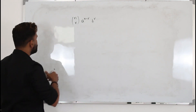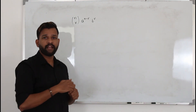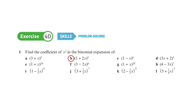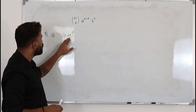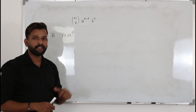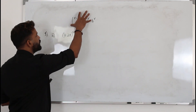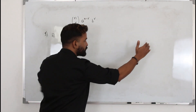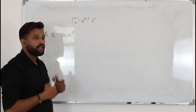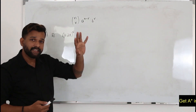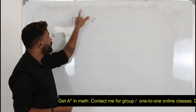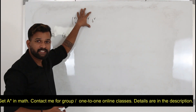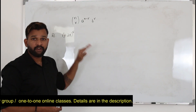Let's take a question from Exercise 4D to explain this. They want you to find the coefficient of x³ in this binomial expansion. You might think: why learn a new method instead of just writing out the full expansion? You can do that, but in certain cases writing all the terms consumes a lot of time. Using the general term is much easier.